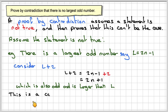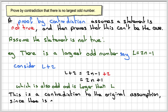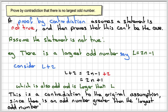So therefore we can say this is a contradiction to the original assumption, since there is an odd number greater than the largest odd number, and therefore the original statement is true, hence the statement is true.